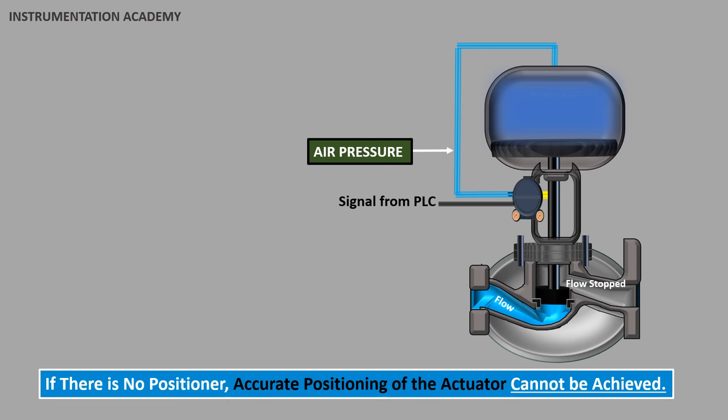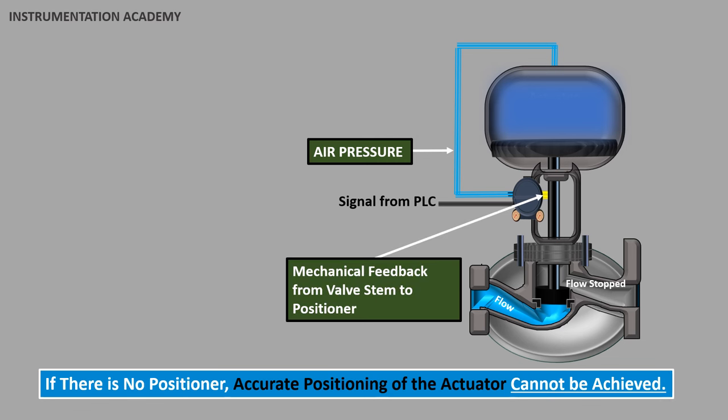So when accurate and faster control is required, a valve positioner is used. A valve positioner will have a mechanical feedback from the valve stem which will inform the valve positioner about the exact position of the valve stem.